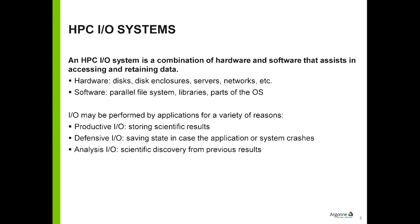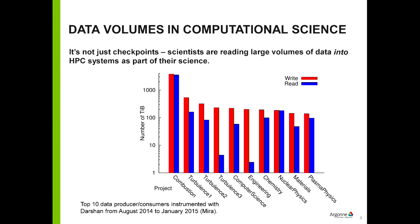There are a lot of reasons you might be doing IO in your applications. Most of it is productive — getting scientific results out or processing scientific data. There's also defensive IO: checkpointing, saving the state of your application periodically so if the system or job crashes you can get back to where you were. And then there's analysis IO, where you've already produced the data and are churning through it to make discoveries.